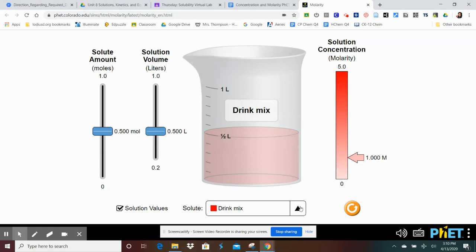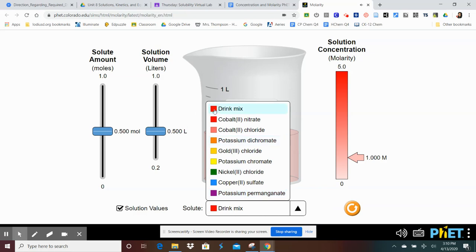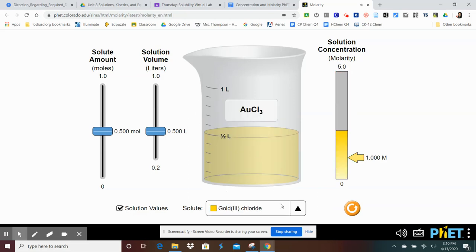Then you'll want to change the solute to the solute that you're looking for. So let's say we're looking at gold three chloride. And then you can change the moles using this bar, or you can change the liters.